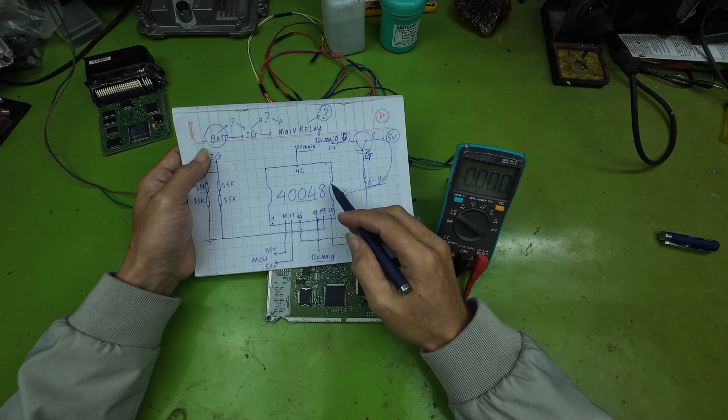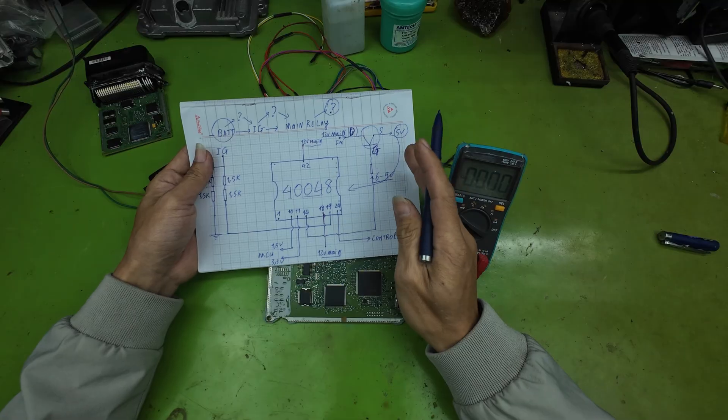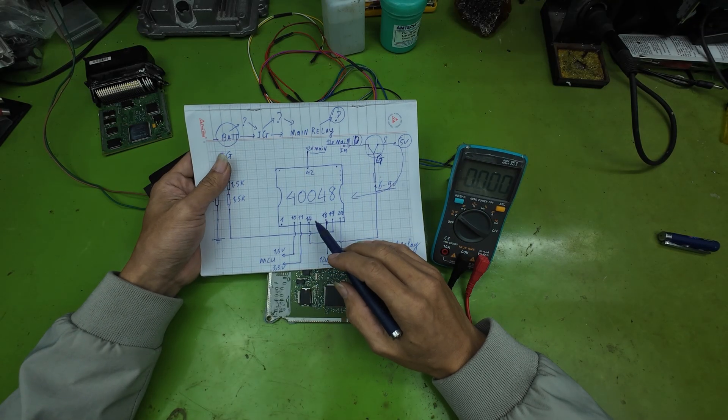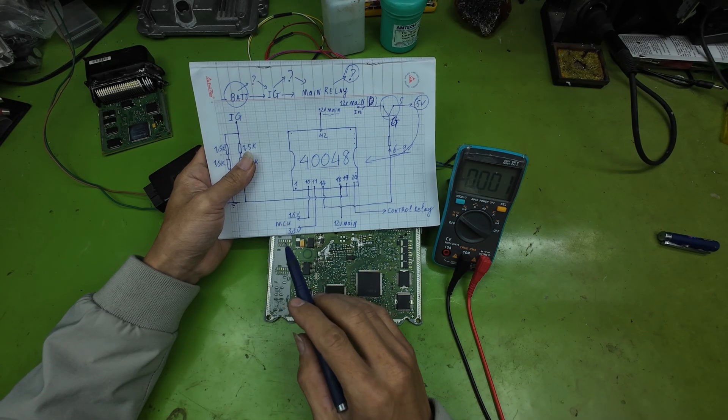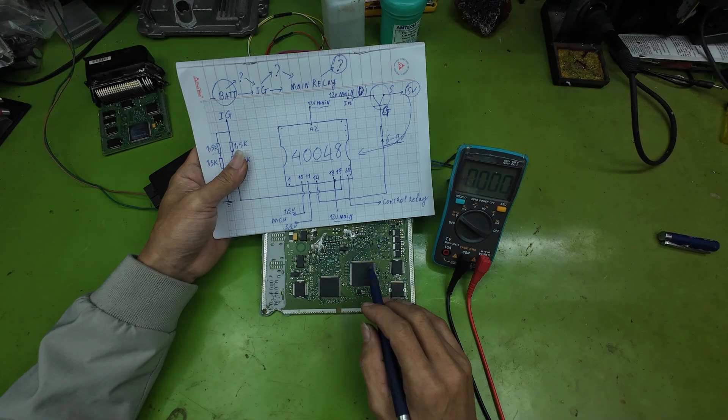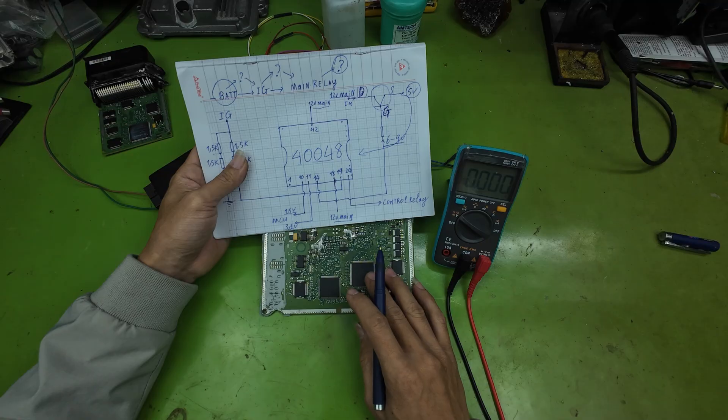The 1.5 volts and 3.3 volts supply is generated by IC40048 for the MCU. If 1.5 volts and 3.3 volts are present, but the ECU still will not run, the MCU itself is likely at fault. This is a logical inference. To confirm MCU failure, you must perform additional checks. I will publish a separate detailed guide on diagnosing MCU faults.